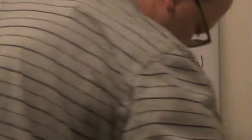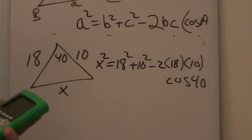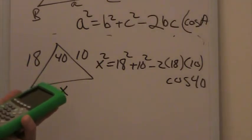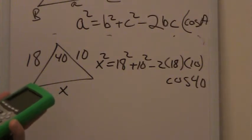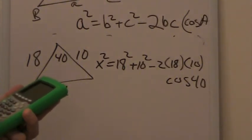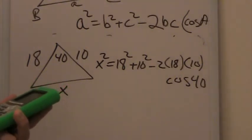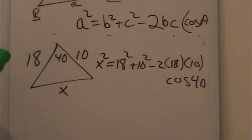Remember, this is x², not x. So you literally type into your calculator the way it reads: 18 squared plus 10 squared minus 2 times 18 times 10 times the cosine of 40. And when you get that, you get 148.22.